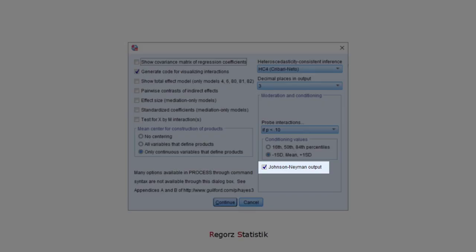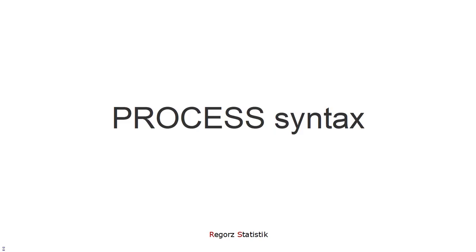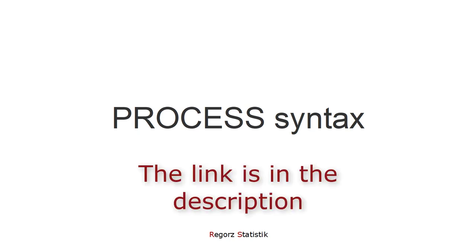And I'd like to get a Johnson-Neyman output. Before we look at the output, two additional remarks. Instead of the dialog, you could use process syntax — it's more flexible. You have options you don't have with the dialog. If you want to know more about that, I've written a tutorial for the main process syntax options. The link is in the description.